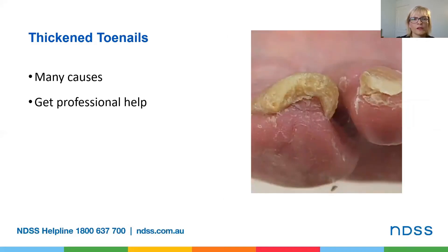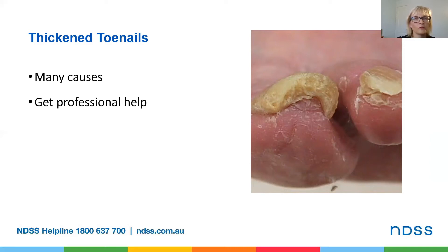This slide shows thickened toenails and there are many possible causes, including injury, poor circulation, ill-fitting shoes or fungal infection. It's best to get professional help from a podiatrist to manage thickened toenails so that the underlying cause can be treated. There are some things you can do at home: soak nails for at least 10 minutes in warm soapy water, check the temperature with your hand and not your feet, completely dry the toenails, then use an emery board, a nail file or trim straight across. Make sure you use small cuts to prevent splitting or chipping.